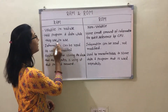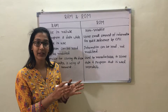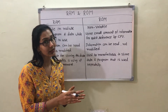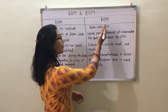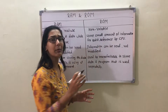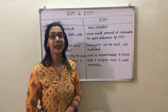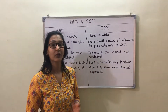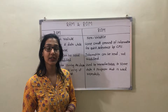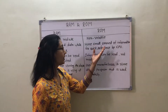The second point is RAM holds programs and data while they are in use — meaning before saving, all data is stored in RAM. While ROM stores a small amount of information for quick reference by the CPU, for example, BIOS (Basic Input Output System) programs are used for quick referencing by the CPU.